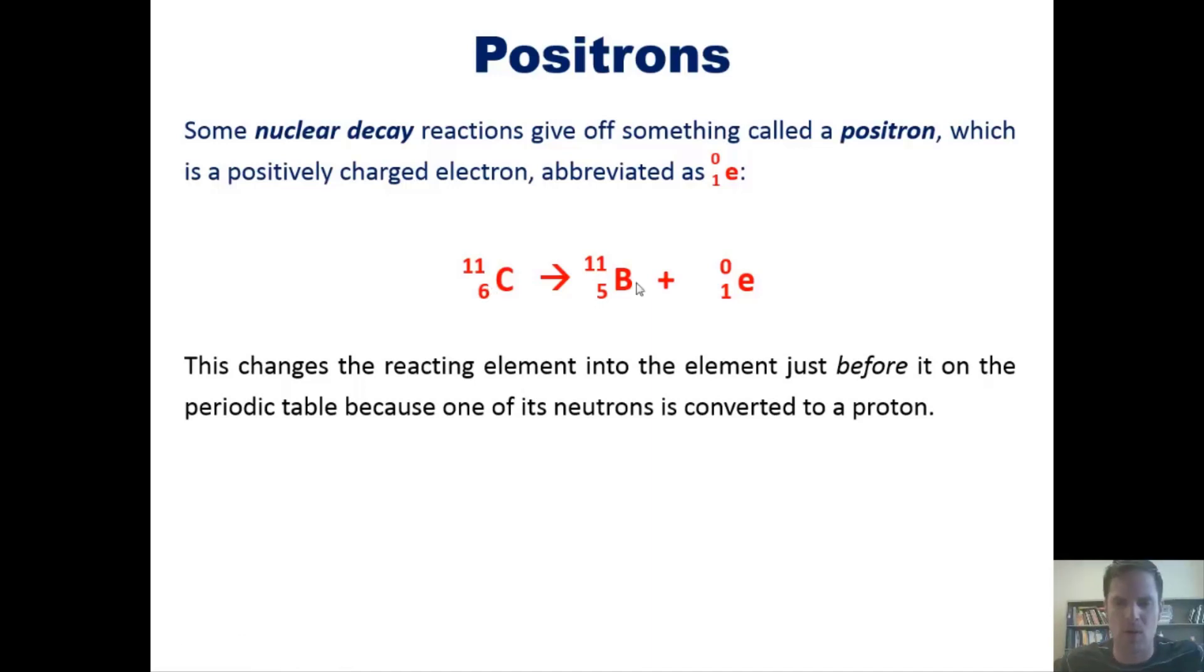Let me explain how that works. This carbon-11 has five neutrons and six protons. In contrast, this boron-11 has six neutrons and five protons. So the carbon has lost one proton and gained a neutron. Conceptually, the proton gives off its positive charge in the form of this positron, turning into a neutron. Hence one proton is consumed and one neutron appears, transforming carbon into boron.